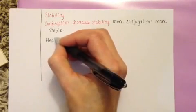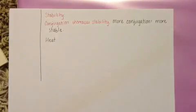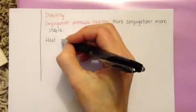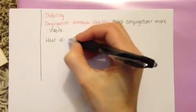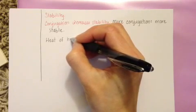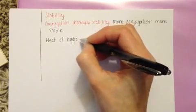And the way that we have been able to demonstrate that conjugation is related to stability is by hydrogenating different types of alkenes and measuring the heat of the reaction.